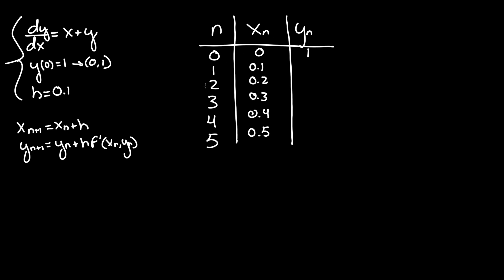So y_1 = y_0 + 0.1·f'(x_0, y_0). Since that's the same as dy/dx, we plug in 0 for x and 1 for y: 0 + 1. So 1 + 0.1(1) = 1 + 0.1 = 1.1. That is our value for y_1.